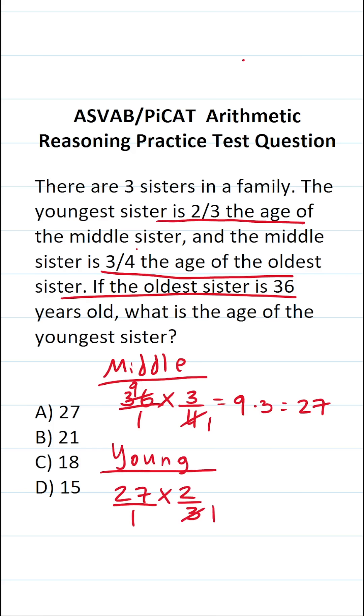More specifically, I can say 3 goes into 3 one time, 3 goes into 27 nine times. This becomes 9 over 1, which is just 9, times 2 over 1, which is 2. 9 times 2 is 18. So clearly, the youngest sister is C, 18 years old.